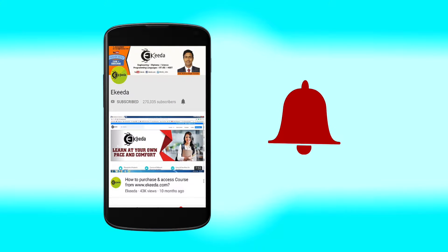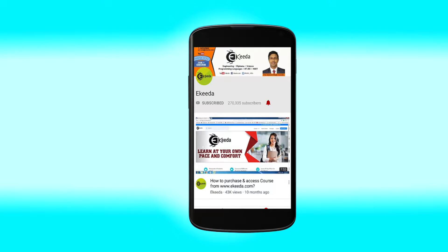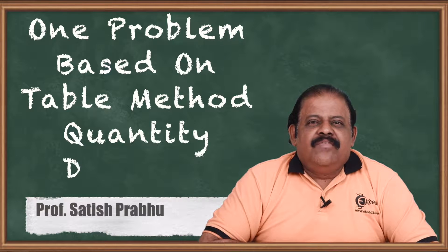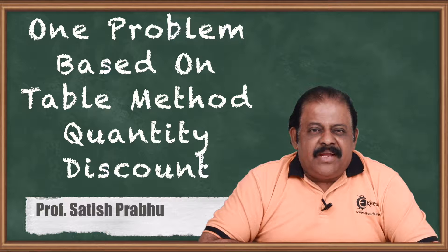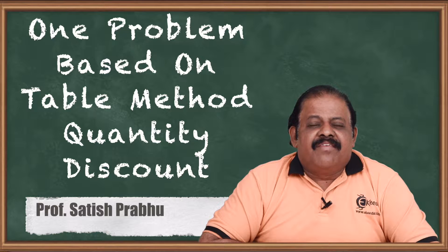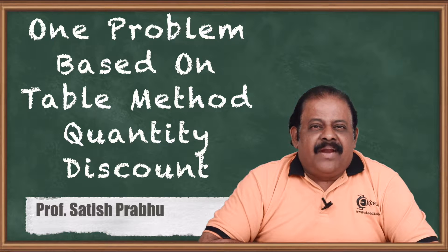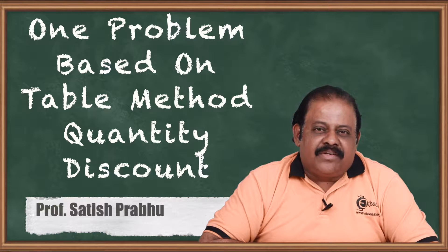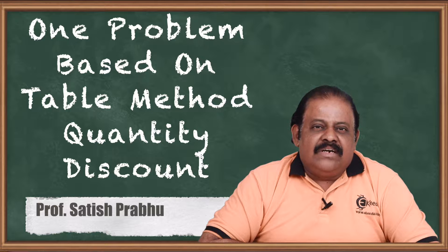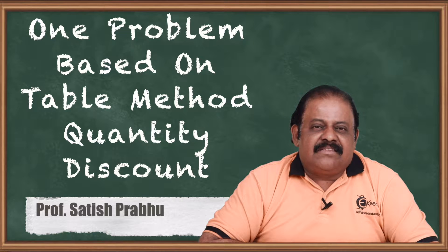Hello friends, today we'll discuss one question of Economic Order Quantity where the table method is required when a supplier is offering discounts at different lot sizes of orders. In that case, how to determine the optimum order size — that is what we are going to understand in this question.